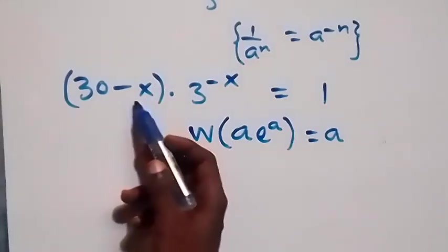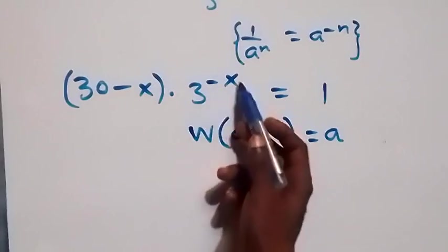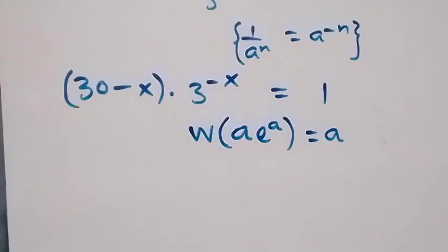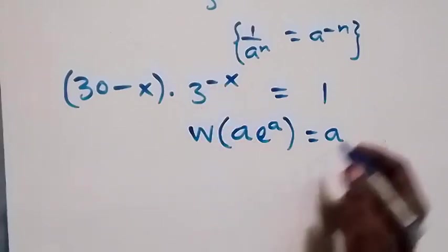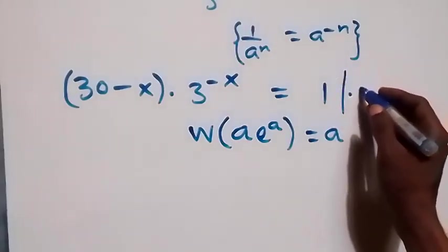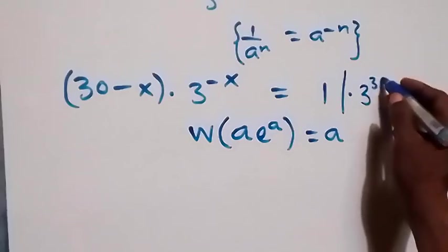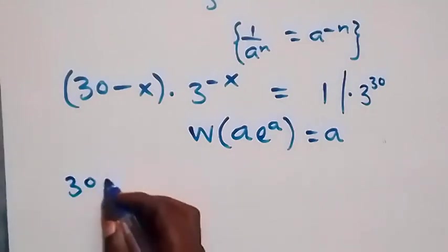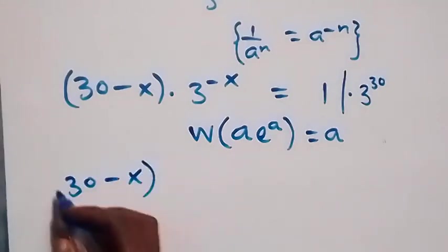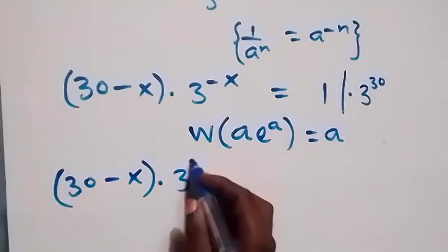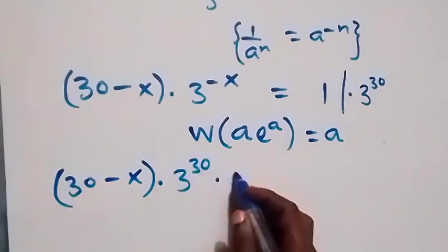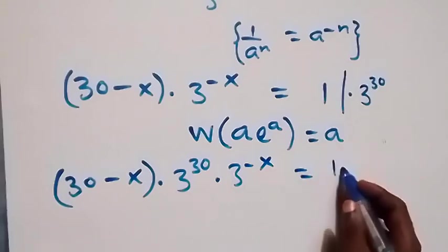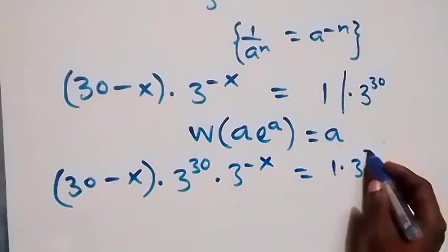Here we have 30 minus x. To make the power 30 minus x, we need to add 30 in the power, which means we can multiply both sides by 3 raised to power 30. Then we have 30 minus x multiplied by 3 raised to power 30 times 3 raised to power minus x equals to 1 times 3 raised to power 30.